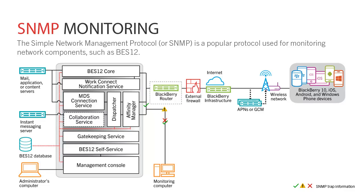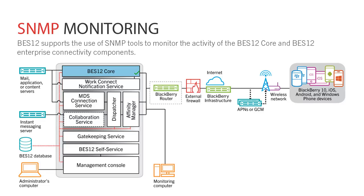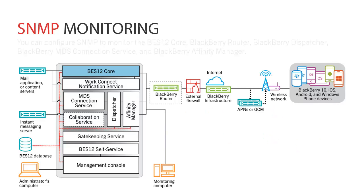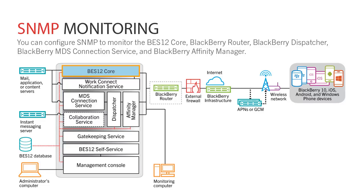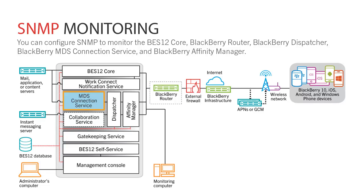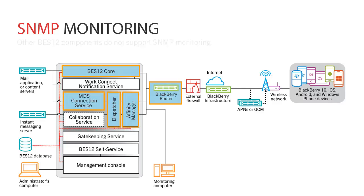The Simple Network Management Protocol, or SNMP, is a popular protocol used for monitoring network components such as BES-12. BES-12 supports the use of SNMP tools to monitor the activity of the BES-12 core and BES-12 enterprise connectivity components. You can configure SNMP to monitor the BES-12 core, BlackBerry Router, BlackBerry Dispatcher, BlackBerry MDS Connection Service, and BlackBerry Affinity Manager. Other BES-12 components do not support SNMP monitoring.